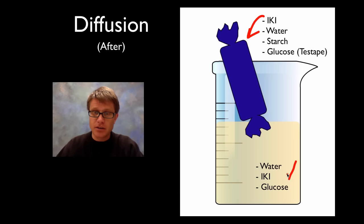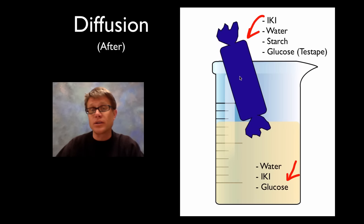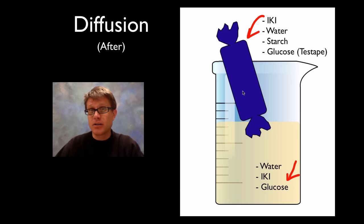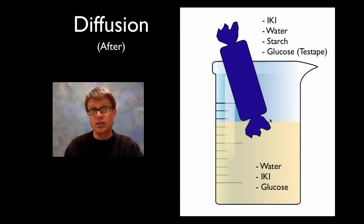On the outside we find glucose has moved out, IKI is still present, and there's water — but no starch, because there's no blue color on the outside. From this we can determine the relative sizes of molecules compared to the pores in the dialysis tubing. The pores are bigger than IKI, since IKI moved from outside in. They're smaller than starch, since starch couldn't get out. To know if water moved, we'd need to mass the tubing before and after to check for a change in mass.